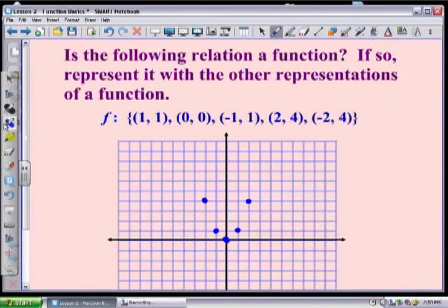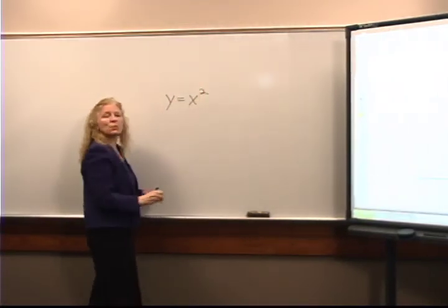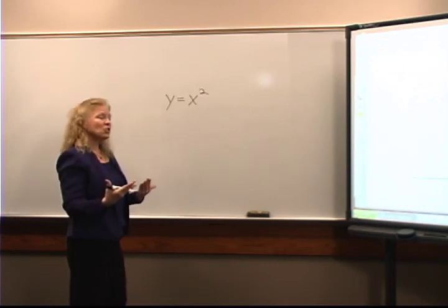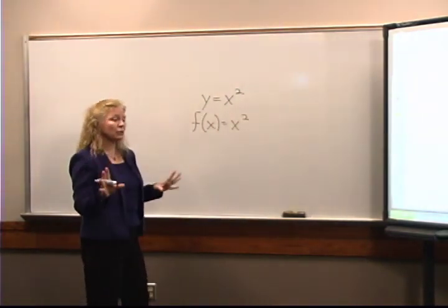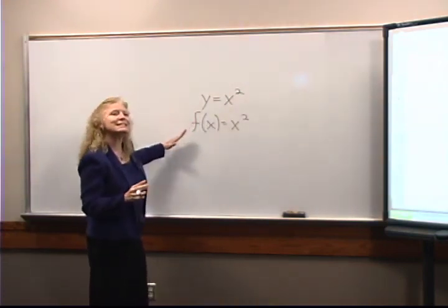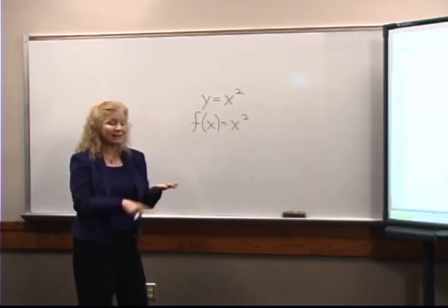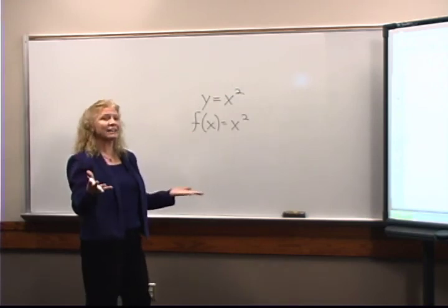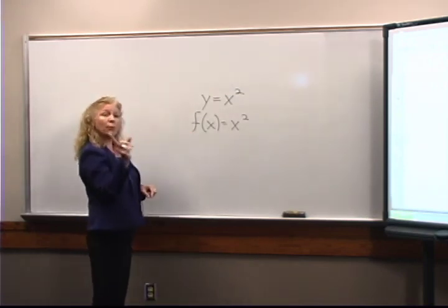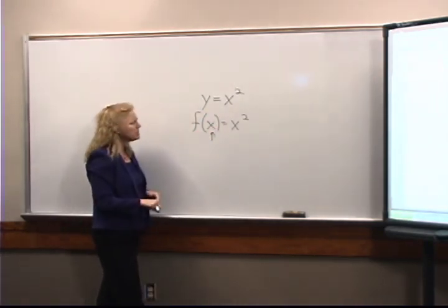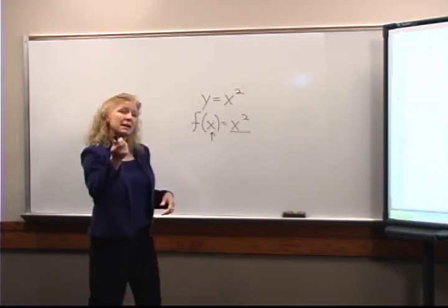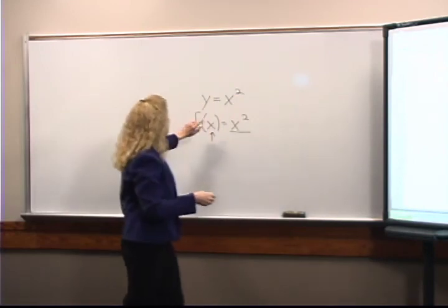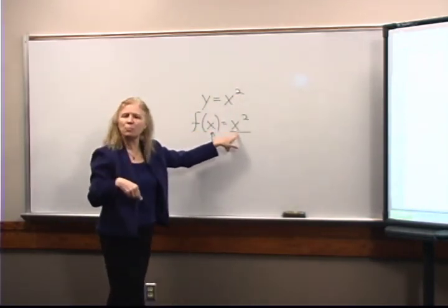You might notice that all the y-coordinates happen to be the x-coordinates squared, so I could say y equals x squared. Now when working with functions we sometimes like to use what's called function notation. The f here is the name of the function — I can call it f, g, q, z, whatever you like. The parentheses show you what your input variable is going to be, and then this other side shows how you get your answer.